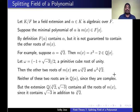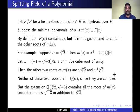Suppose k over f is a field extension and alpha is an element of k. Assume that alpha is algebraic over f. Then alpha has a minimal polynomial, say m(x) over f. By definition, f(alpha) contains alpha, which means f(alpha) contains a root of the polynomial m(x). But it is not guaranteed that f(alpha) contains all roots of m(x).